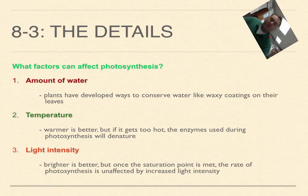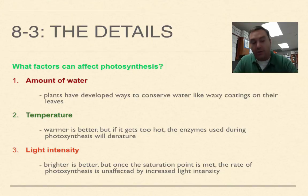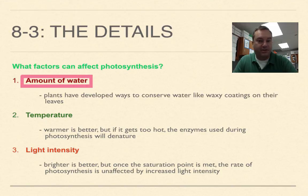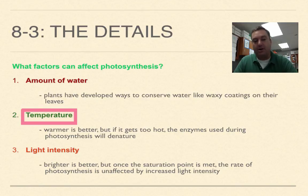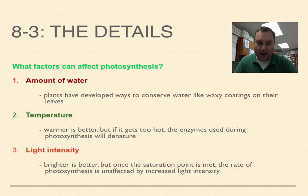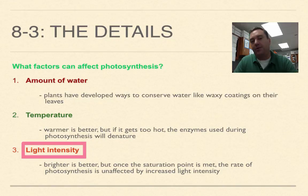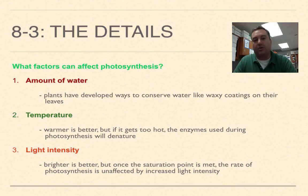Three things can control the rate of photosynthesis. First, the amount of water — we see this in our yards in summer: lots of rain means green grass, little rain means brown or yellow grass because the plant can't photosynthesize without water. Second, temperature — warmer conditions help reactions proceed, but if it gets too hot the enzymes denature and photosynthesis stops. Third, light intensity — brighter is better, but plants reach a saturation point where photosynthesis can't go any faster, mainly because there's only so much chlorophyll available.